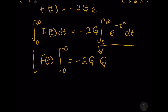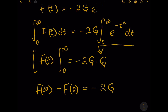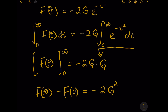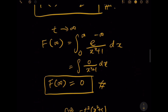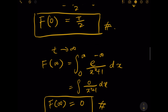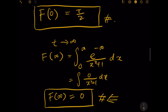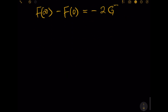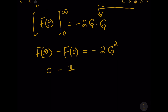On the left side we have F(∞) minus F(0). Luckily we already found both values: F(∞) equals zero and F(0) equals π/2. So the left side gives us zero minus π/2, which equals negative 2G squared. Therefore, negative π/2 equals negative 2G squared.